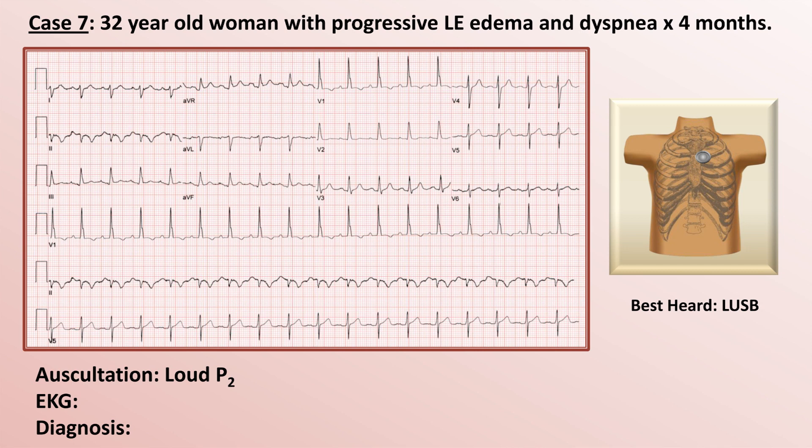The QRS axis is quite unusual. The QRS complex is downgoing in lead 1 and upgoing in AVF, which means the axis is rightward deviated. With the most equiphasic lead being lead 2, the axis is probably around positive 150 degrees. Regarding P wave morphology, the P waves in V1 are atypical — instead of their usual biphasic appearance, they are monophasic with a single upright deflection around one small box in area, consistent with possible right atrial enlargement.